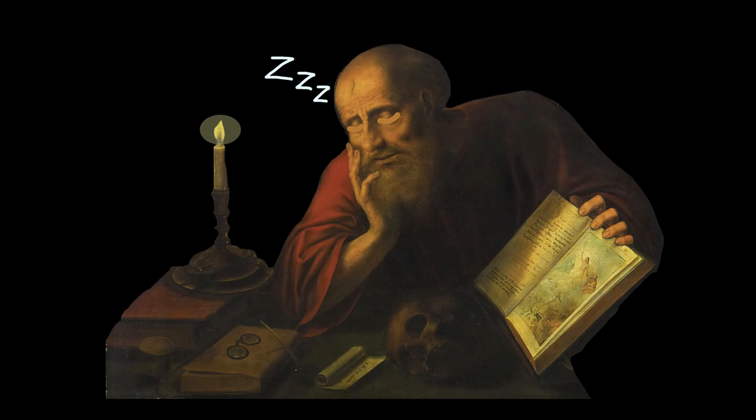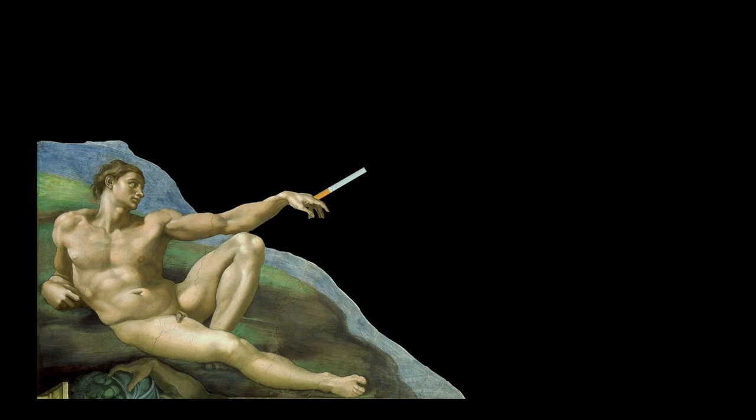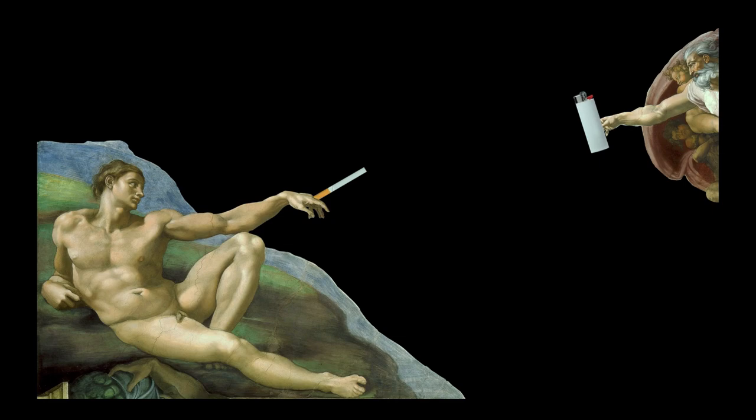We can find an allusion to this idea in the beginning of Haydn's creation. The oratorio starts with a quote from the book of Genesis. God created the heaven and the earth, and the earth was without form and void, and darkness was upon the face of the deep, and the Spirit of God moved upon the face of the waters.